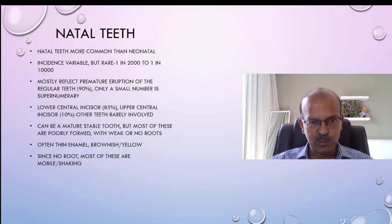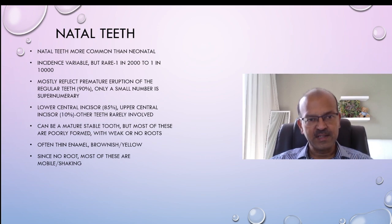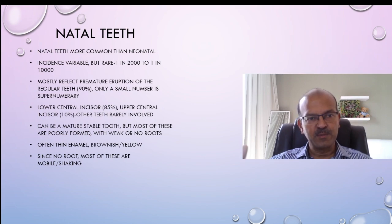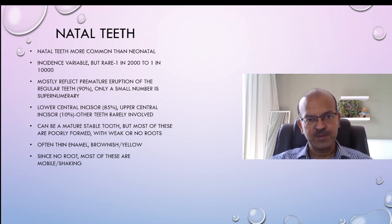We can just put it as gum prominence. Most of the time it reflects a premature eruption of the regular teeth, which is the milk teeth. In only a small number of babies it's supernumerary, so when it is there and you want to remove it, it's actually from the milk teeth itself. So only remove it if it's needed.